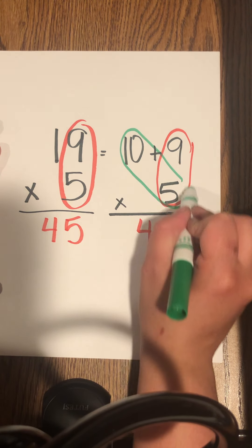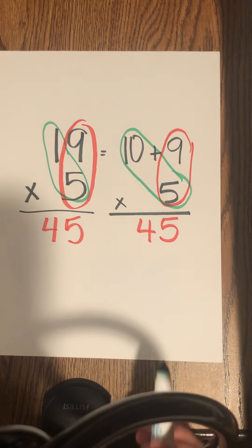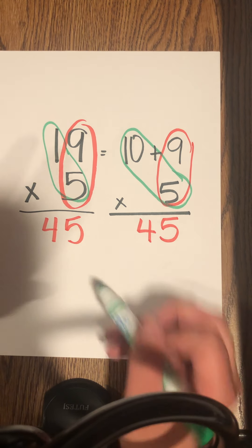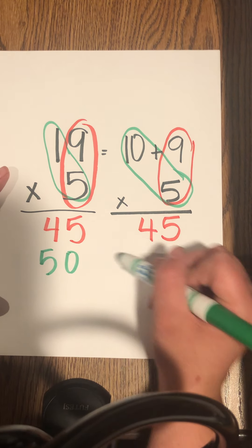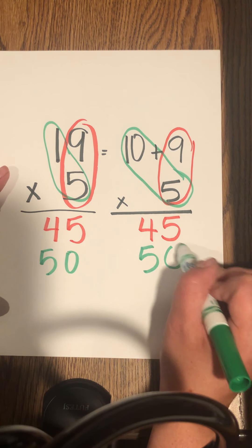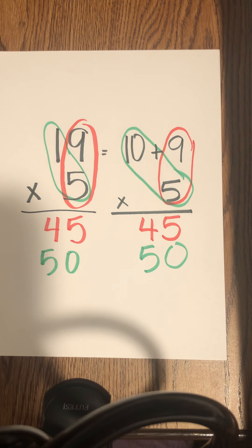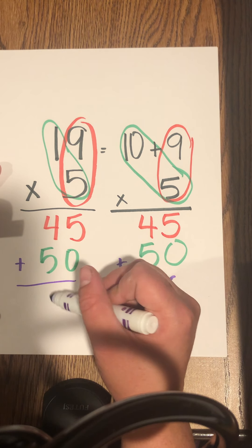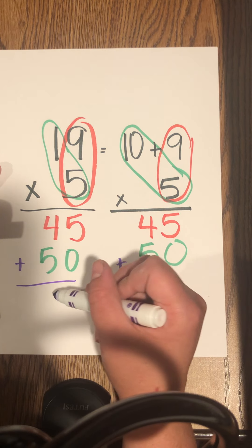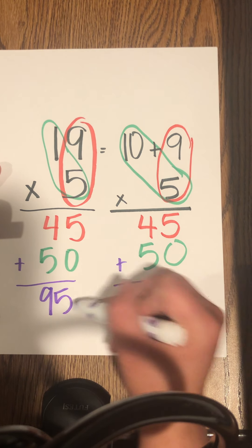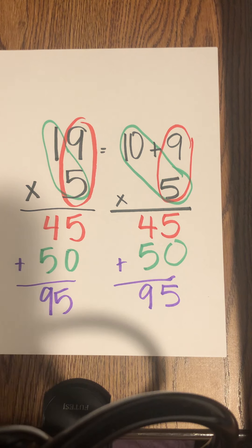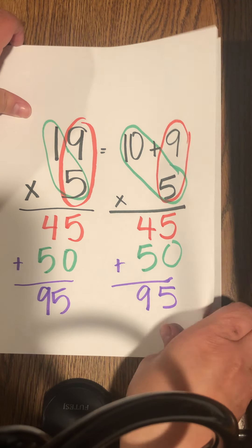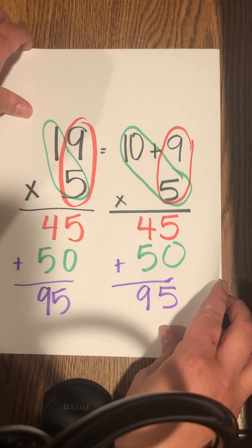10 times 5. Remember, it's not 1 times 5, it's 10 times 5 is 50. And what do we do with those numbers? We add them up. 45 plus 50 is 95. My words don't want to work today. All right, so 19 times 5 would be 95.